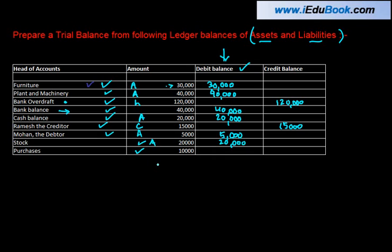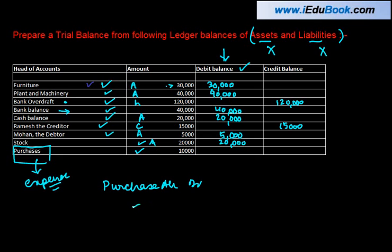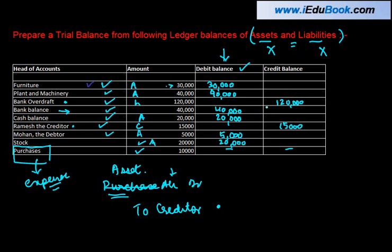Purchases — a purchase is an expense, not an asset and not a liability. When you purchase something, you pass an entry: purchase account debit to creditor. A creditor is a liability, just like Ramesh is a liability, so we put that in the credit column. But purchases are not an asset unless it was a purchase of an asset — in that case you would have debited the asset account instead. Hence, purchase will not have any treatment here because we are only looking at assets and liabilities. But if you were generally preparing a trial balance, the purchase balance would be written on the debit side.